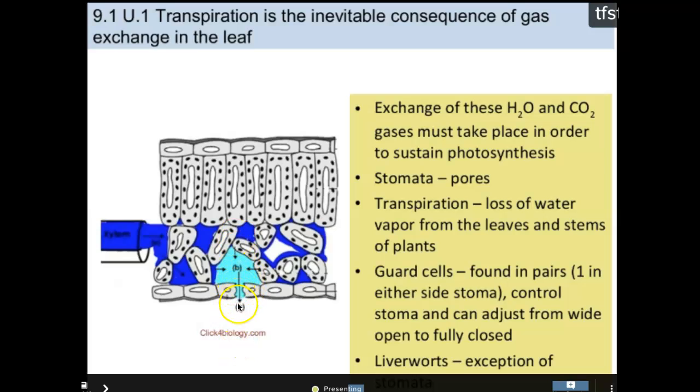These pores are called stomata. I'm hoping you remember this from 9th grade biology. Stomata are pores, and on the outside of each of these stomata pores, these are guard cells. They're found in pairs, and they basically control when the stomata are open and when they're closed. This is what's going to allow for gas exchange. This is also how plants lose water through transpiration.